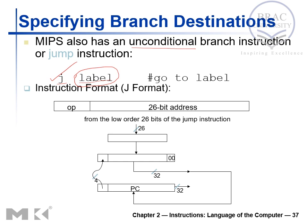Let's look at the J-type instruction format. The J-type instruction format has an opcode and the rest is a 26-bit address. If you compare this with R-type and I-type instructions, R-type has opcode, RS, RT, RD, shift, and function fields, and I-type has opcode, source, destination, and a 16-bit constant. For J-type, we only have the opcode and the remaining 26 bits as the address.